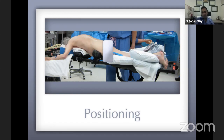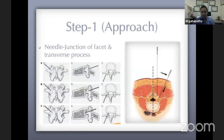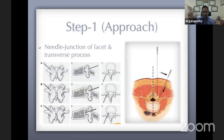My cutoff is: if the fracture is above T7, I tuck the arms when using X-ray; below T7 you can leave them on arm boards. Using a Jamshidi needle, you dock it at the junction of the facet and transverse process. With biplanar fluoroscopy — AP and lateral X-rays — you advance the needle through the pedicle into the vertebral body without breaching the medial wall of the pedicle into the canal. The steps are followed carefully to access each pedicle level.